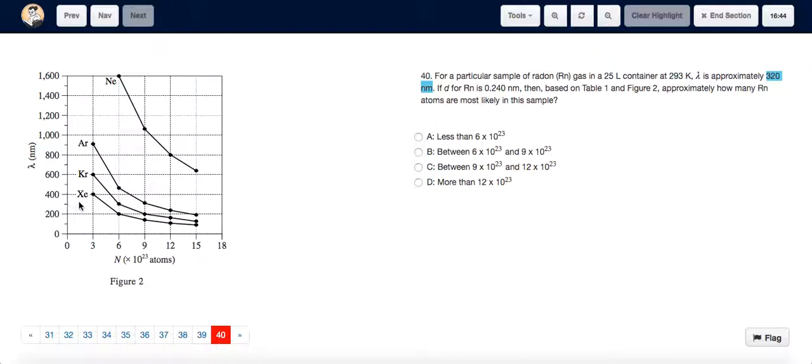But when lambda is 320, at that time, Argon has somewhere around 9 into 10 raised to 23 atoms, Krypton has somewhere around 6 into 10 raised to 23 atoms, Xenon has somewhere around 4 into 10 raised to 23 atoms.